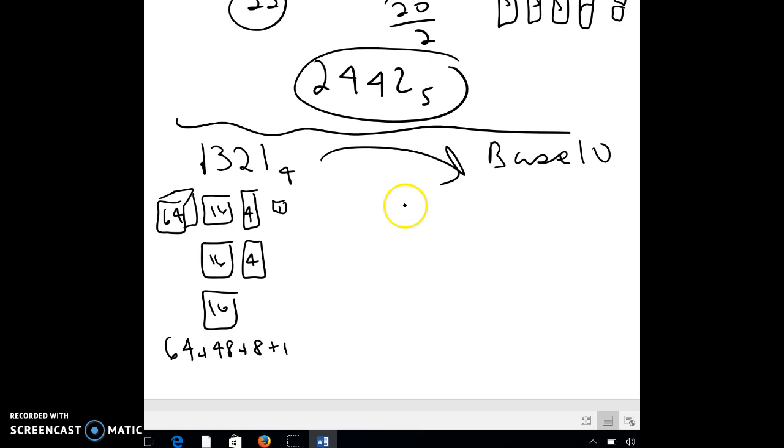The other option is to use that same chart we did before, kind of a place value chart, and say, I'm doing base 4, so I know I have powers of 4. And you can write in the numbers, which would be this. And so then, again, the reason we call it place value is because each place has a value.